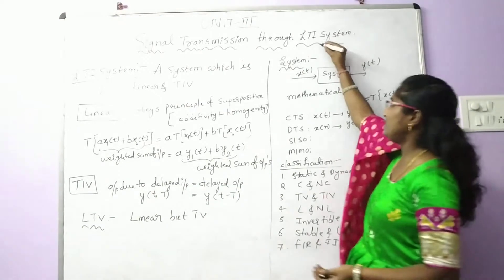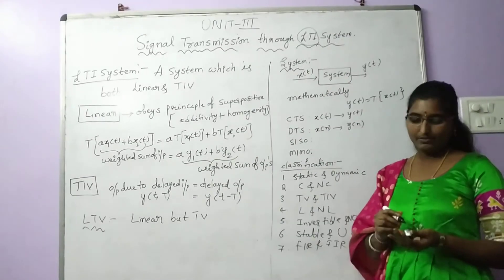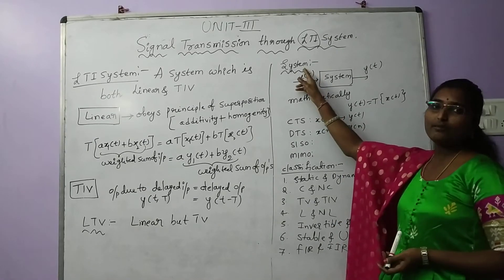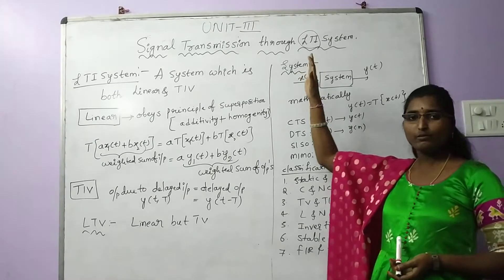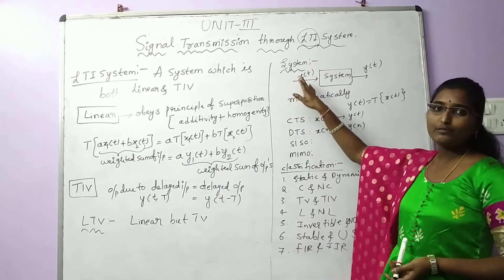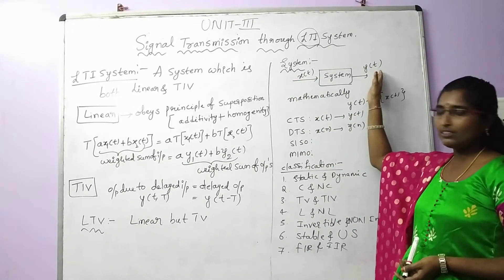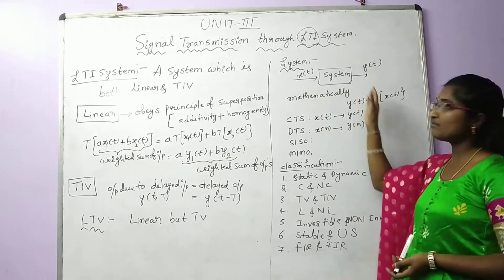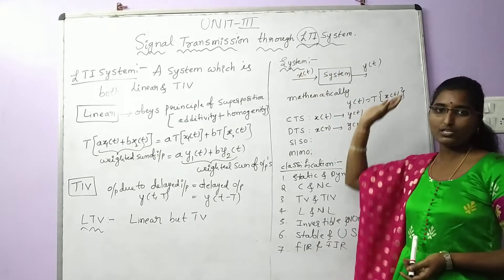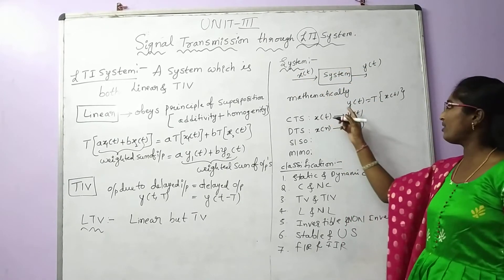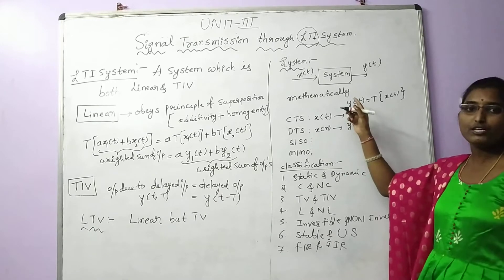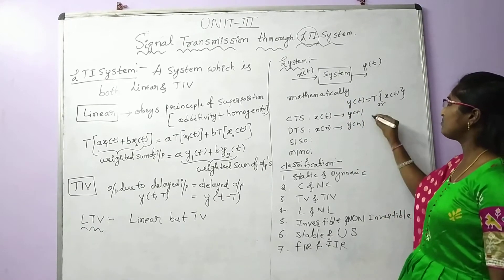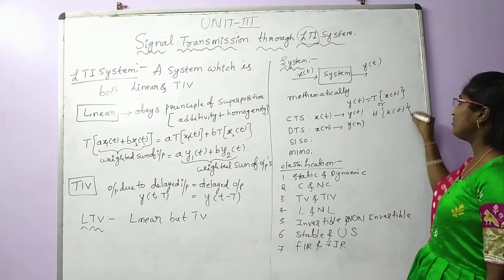LTI is what is important here. Already in the first unit, we have seen in brief about the system. A system relates the input and output — it transforms your input signal and produces the output signal. Mathematically, we represent this as Y(t) = T{X(t)}, or in some textbooks as H{X(t)}.